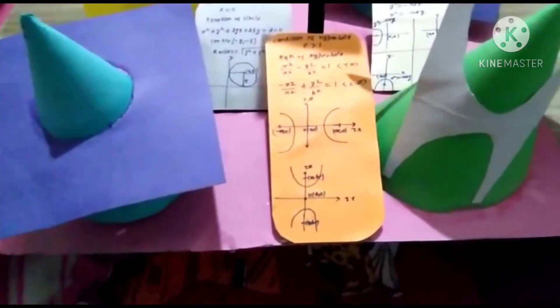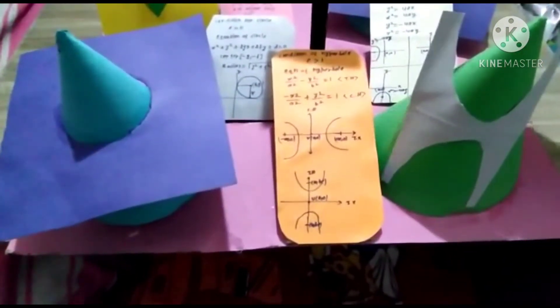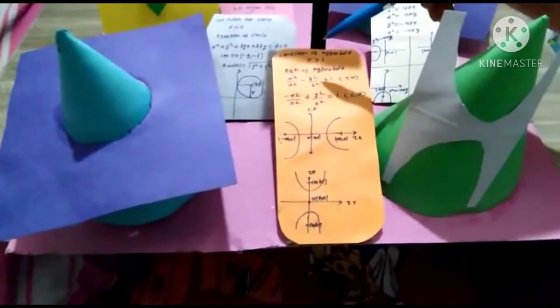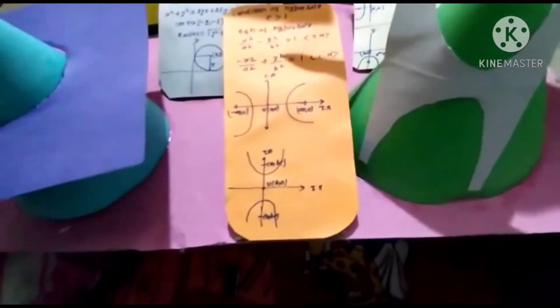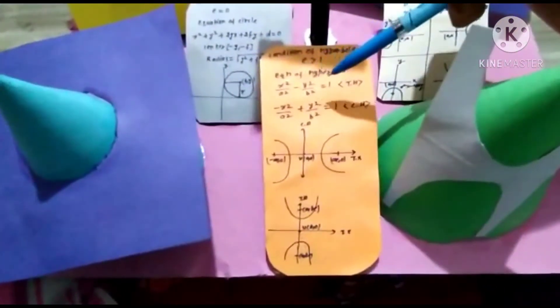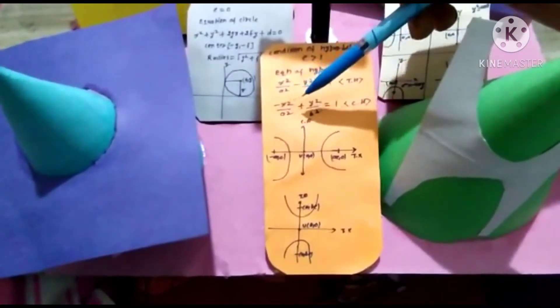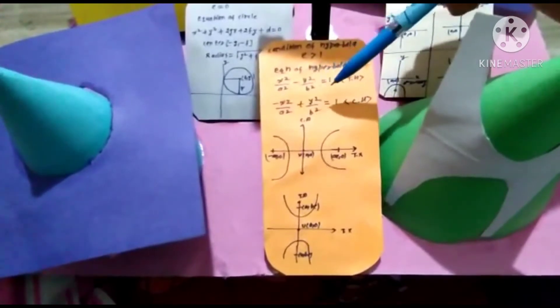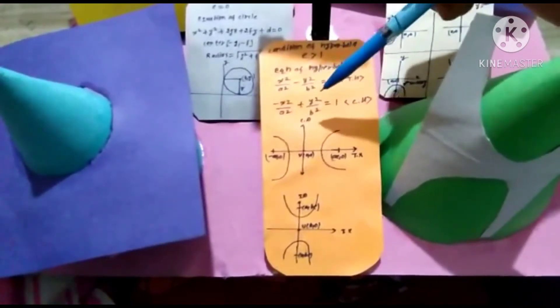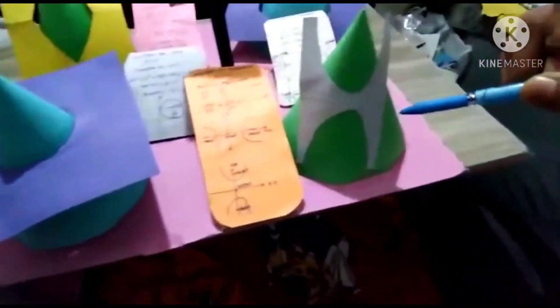Then we are discussing about the equation of hyperbola. In this hyperbola, eccentricity is greater than 1. Equation of hyperbola is x square by a square minus y square by b square is equal to 1, and minus x square by a square plus y square by b square is equal to 1. Then we make a hyperbola.